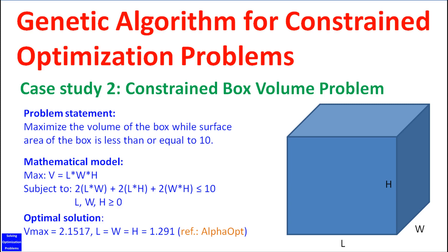Hi everyone. In this video I'm going to show you my genetic algorithm for constrained optimization problems. This genetic algorithm has a mechanism to restart its search process if it gets stuck in local optima, therefore this genetic algorithm has a very high success rate of achieving global optimal solutions.